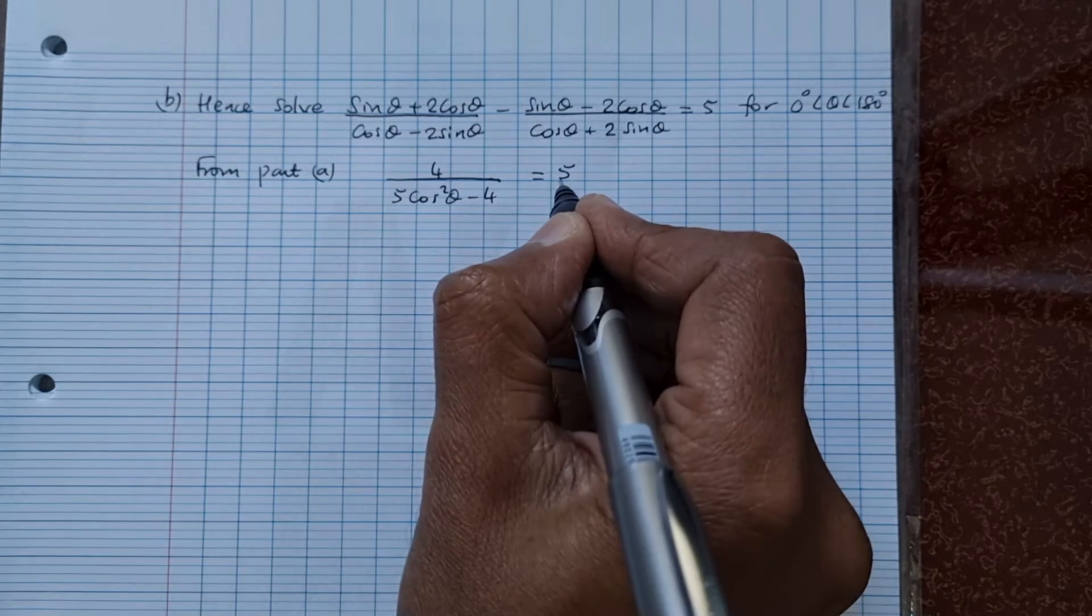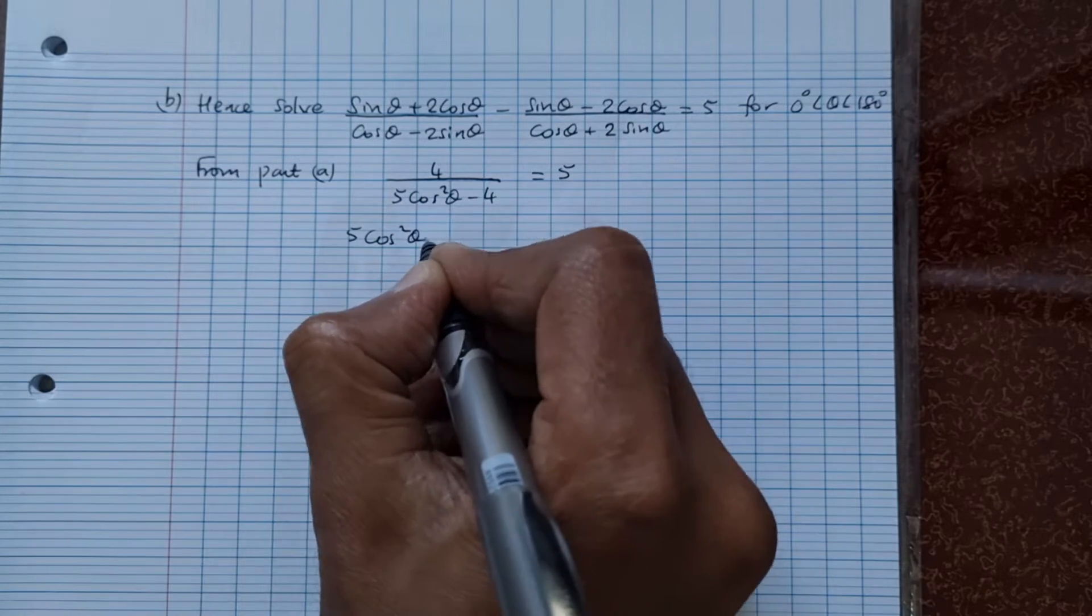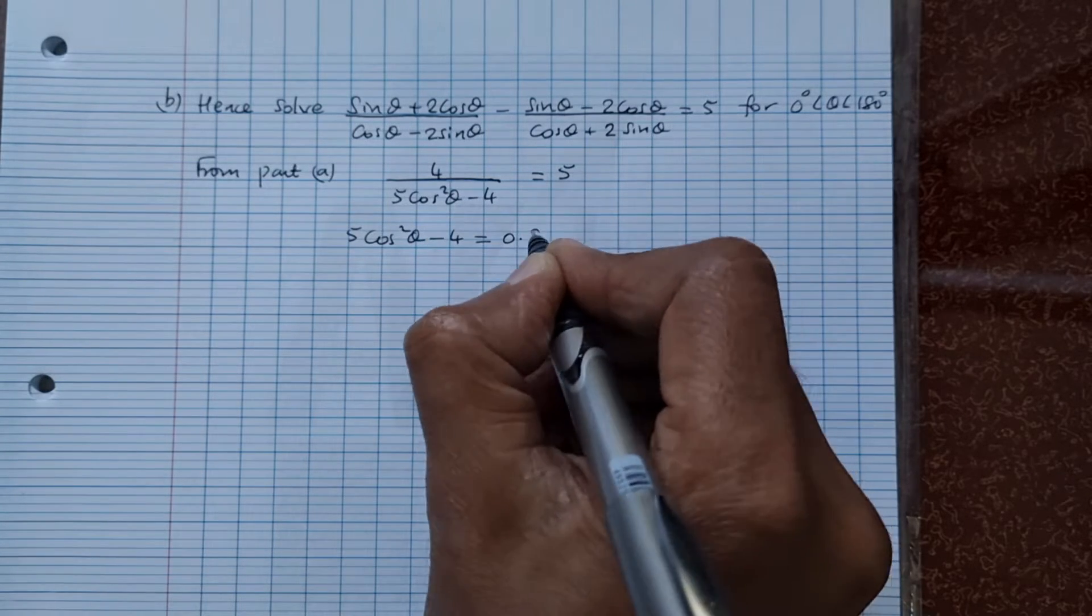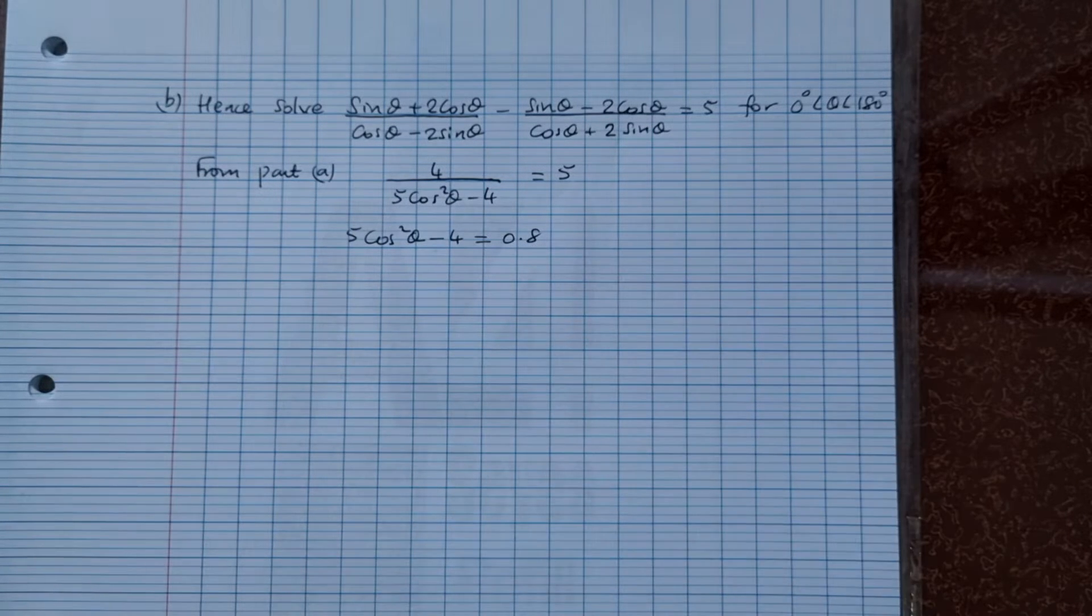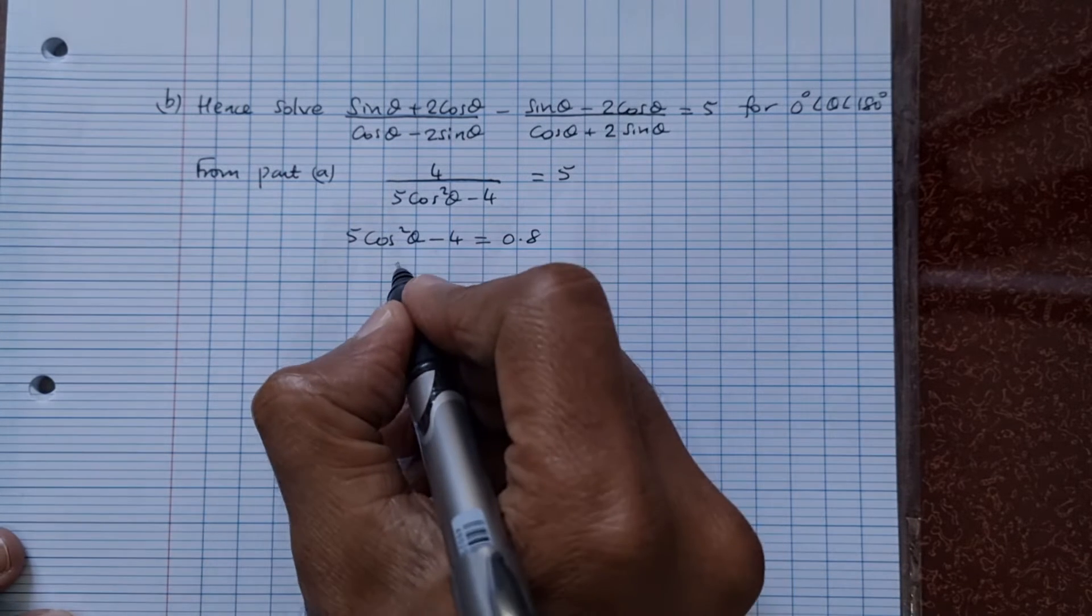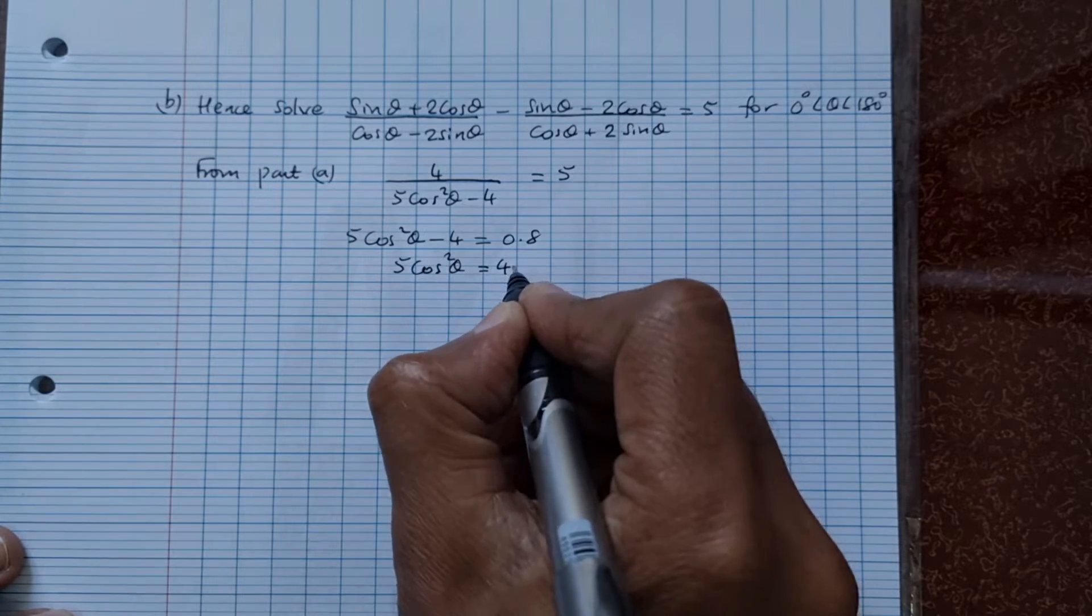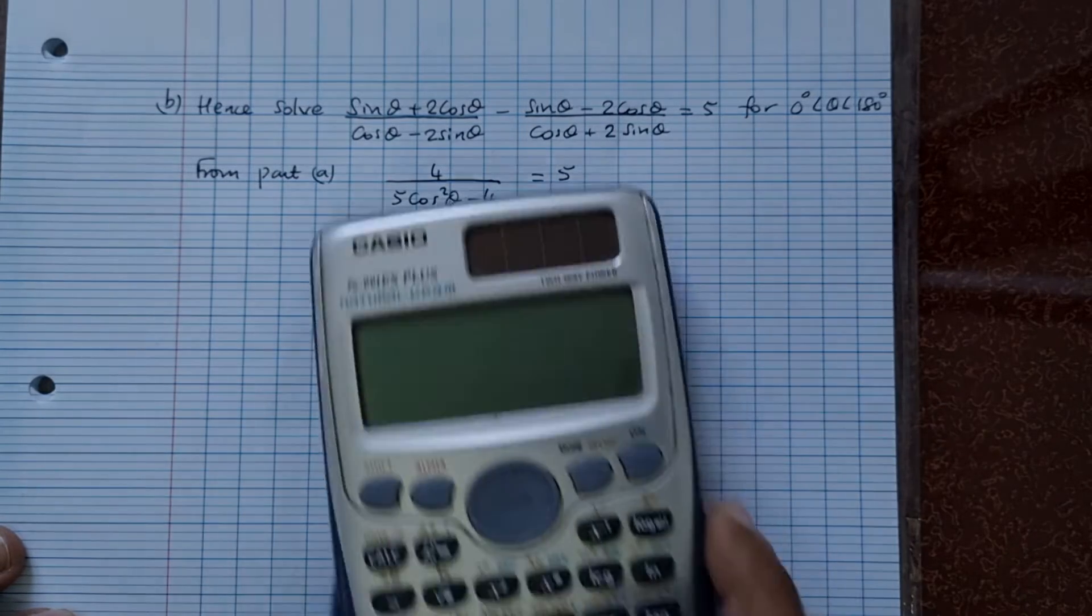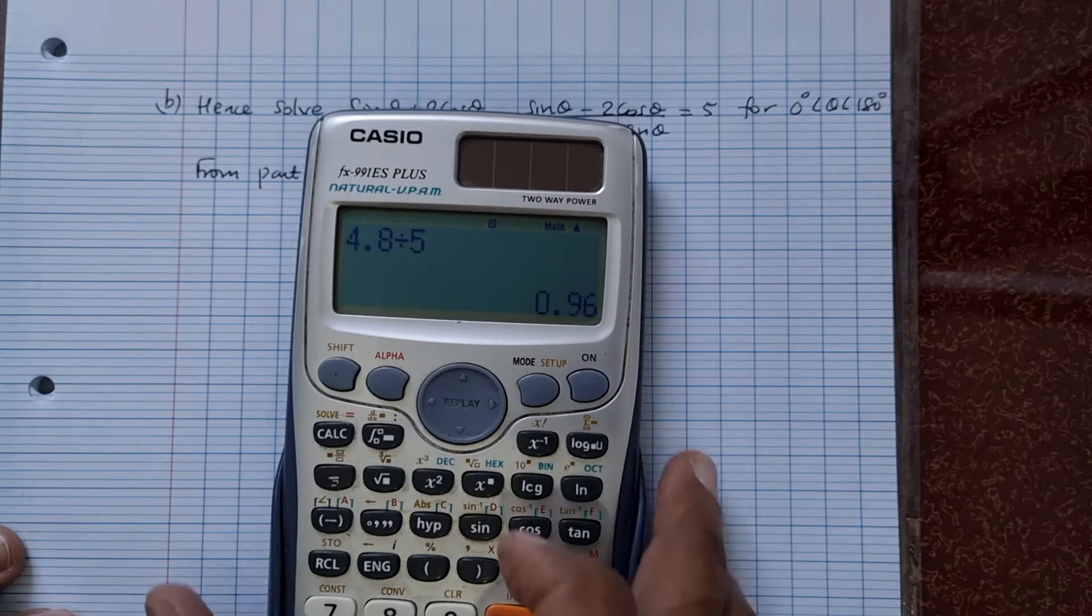You're going to get 4 divided by 5 is equal to 5 cos²θ minus 4 is equal to 4 divided by 5 is 0.8. 5 cos²θ is equal to 0.8 plus 4 is 4.8, and then cos²θ is equal to 4.8 divided by 5, and you get 0.96.